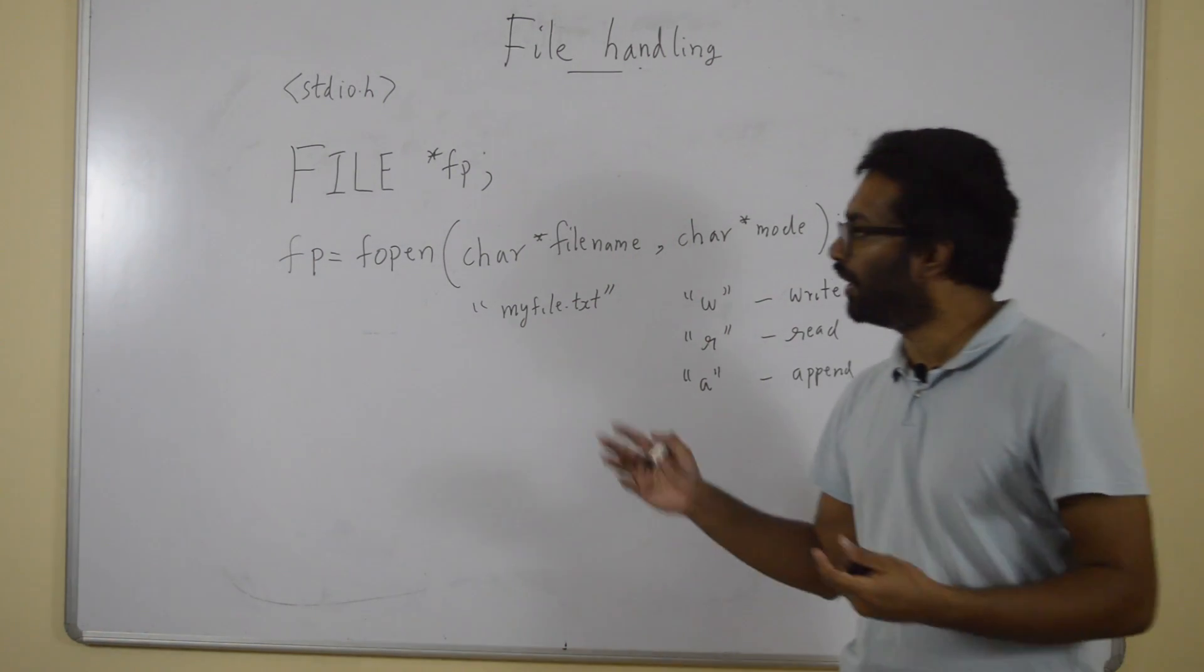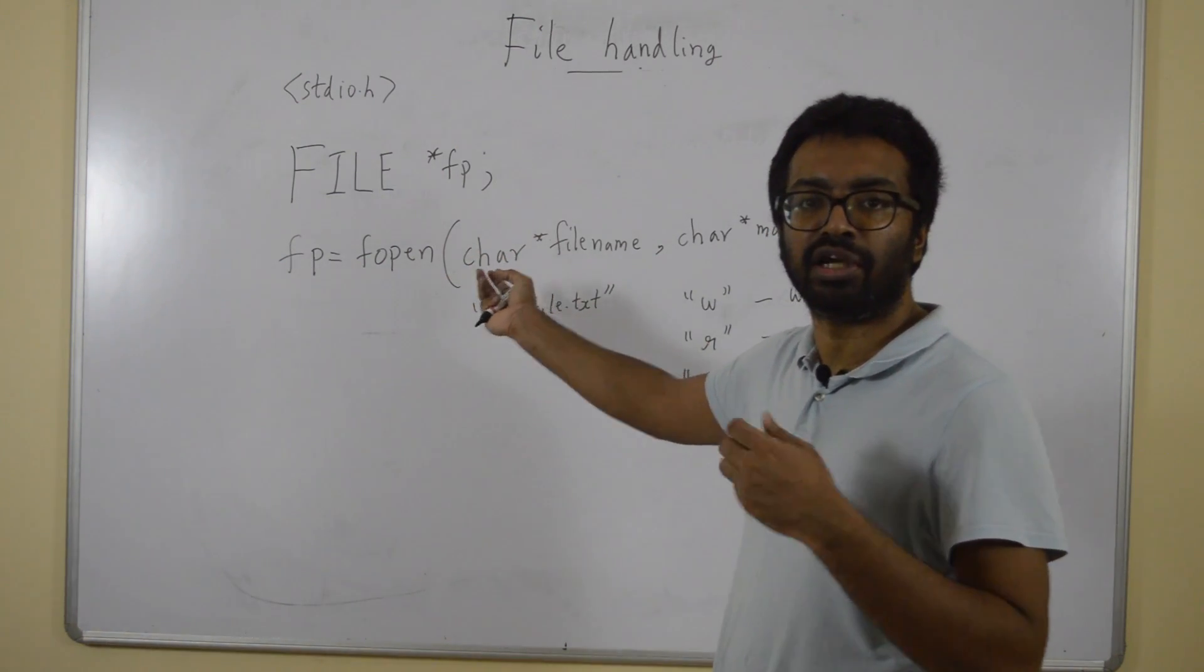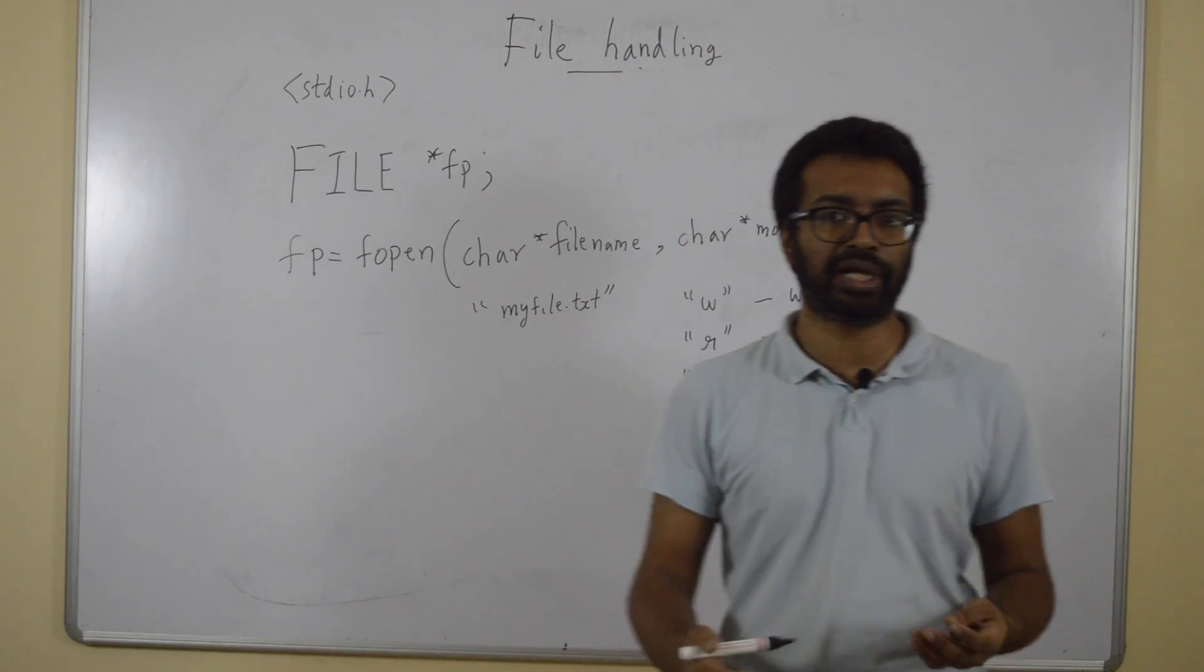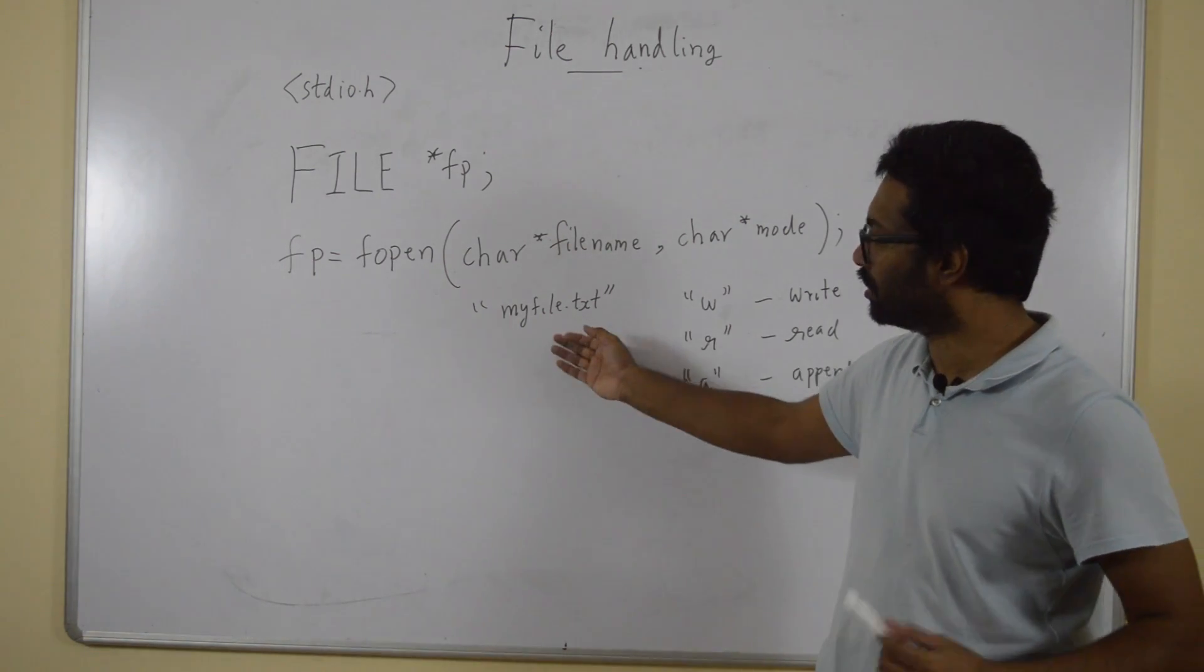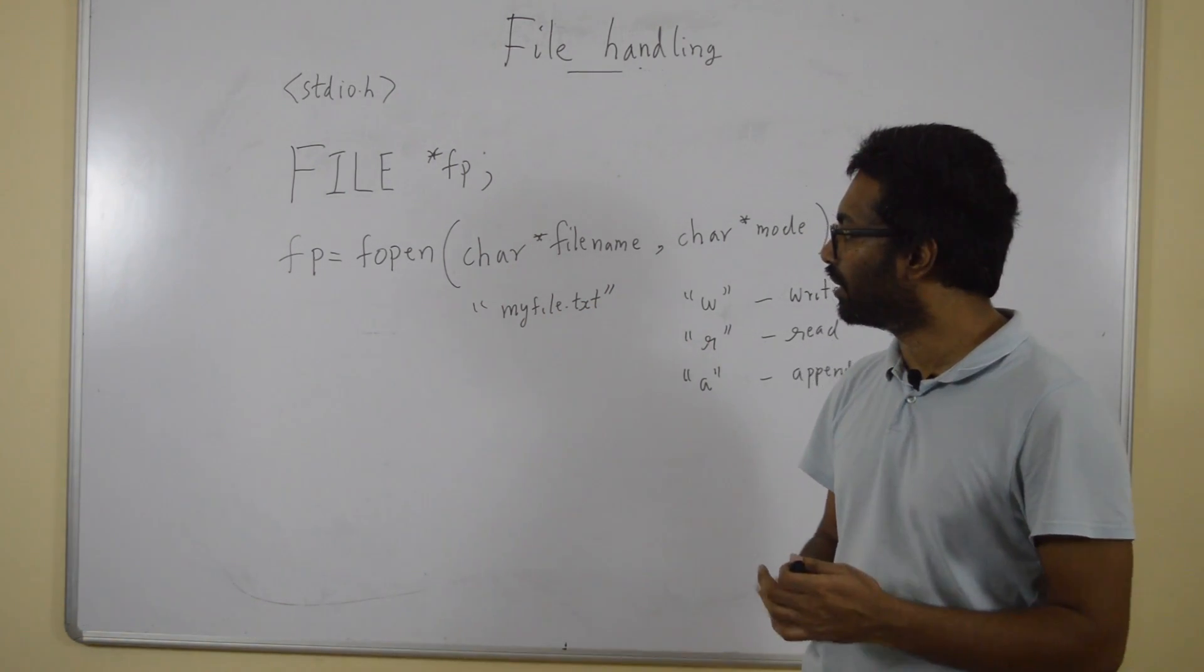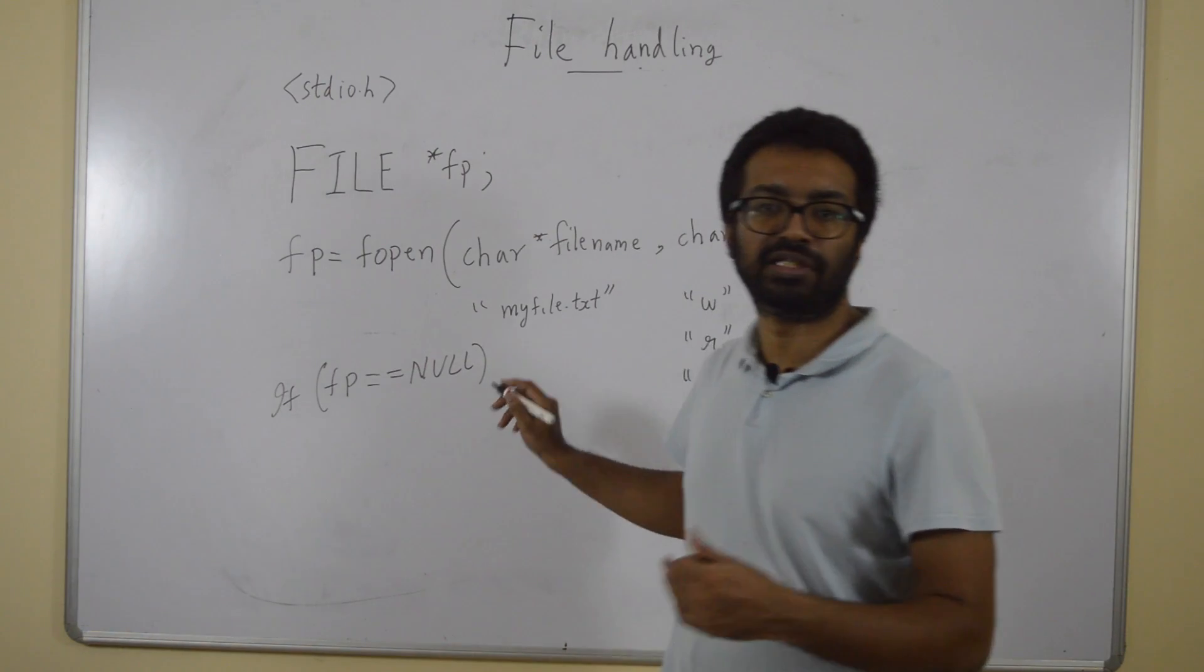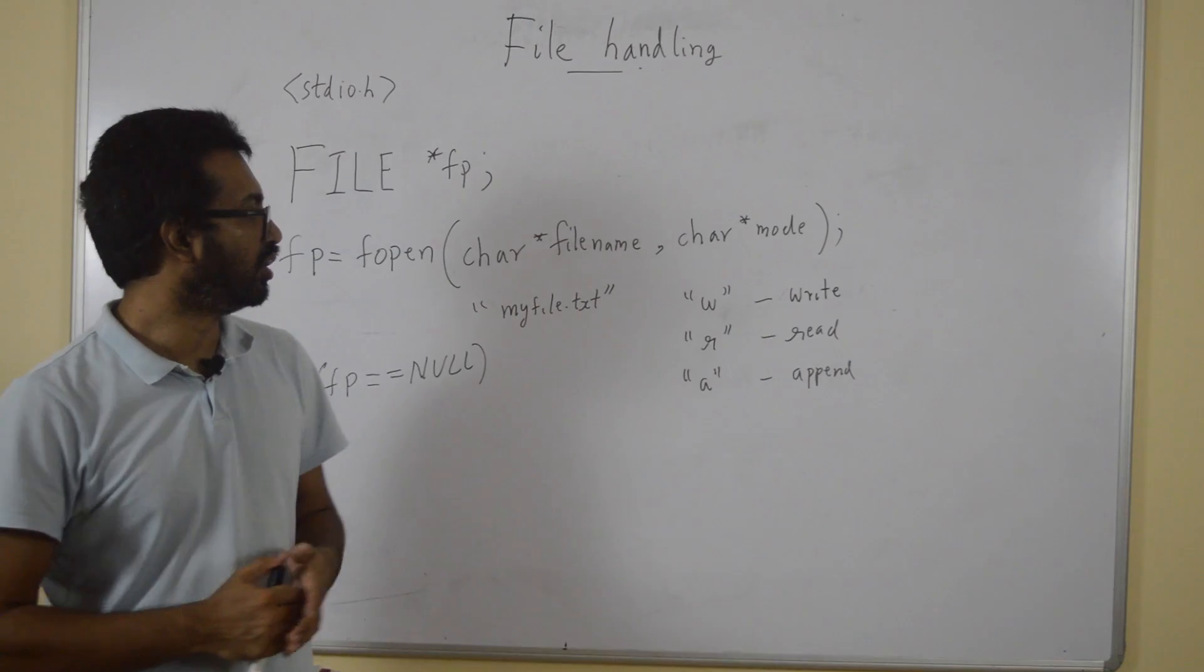You create a file like this, you open a file like this and the file pointer is returned to fp. Now, if fp is null, that is when you get a null pointer back, it means there's something wrong. Maybe a file such as this does not exist. So you need to check whether if fp is null or not. If fp is equal to null, do something. That means there's some error. Otherwise, you can move ahead.